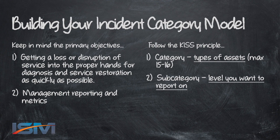In summary, when defining your incident classification scheme, always keep in mind the two primary objectives: how can we route the incident as quickly as possible to the right group or individual, and what do we need to report on as part of our overall IT service management system? Focus on those two things and keep it simple. Do not over-engineer your category model. Keep in mind you still have your resolution codes and your CIs — not everything needs to be in the classification scheme.